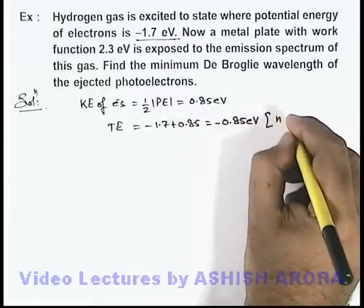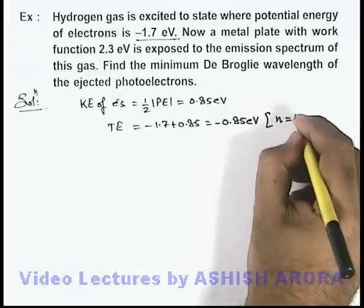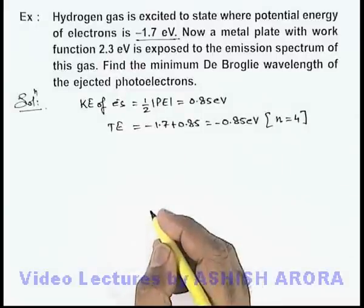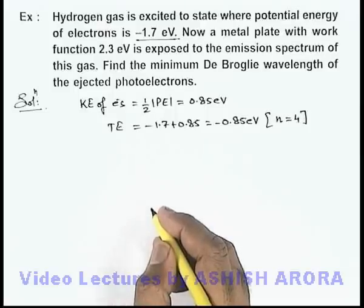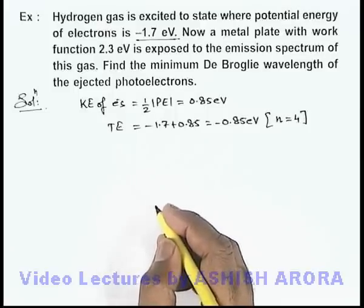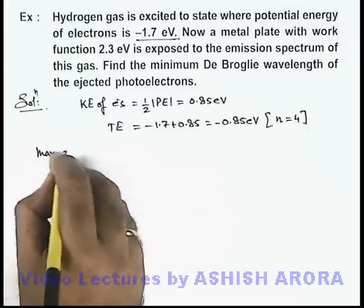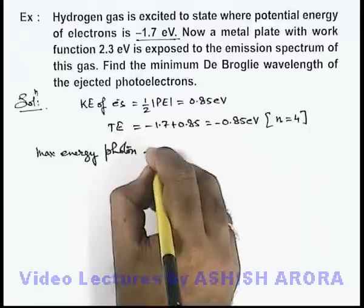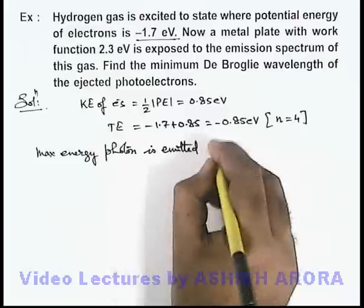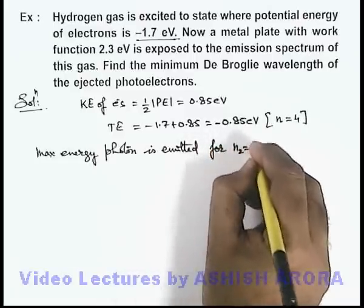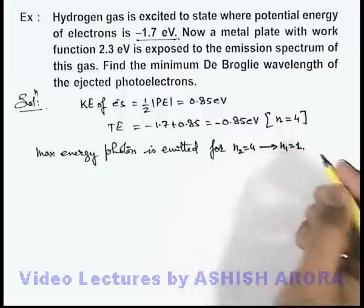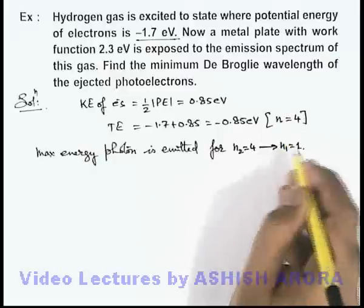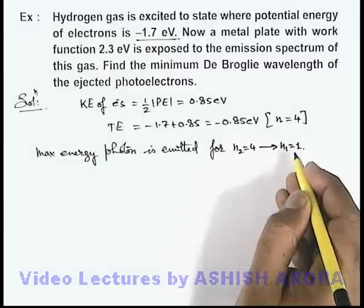That means for quantum number n equal to 4, this is the 4th orbit in which the electron exists after excitation. Now in this situation, if we talk about the maximum energy photon for the transition, the maximum energy photon is emitted for n₂ equals 4 to n₁ equals 1, because the highest energy photon is emitted when it drops back directly to the ground state where the difference of energy will be maximum.